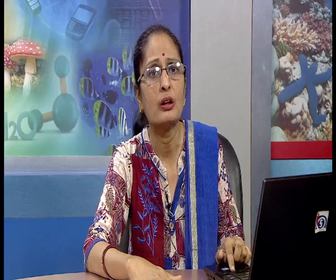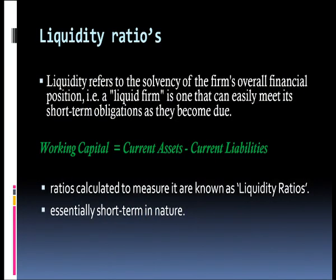We come to the first kind of ratio, which is the liquidity ratio. In this, we will study today the current ratio and the quick ratio. Liquidity ratios are those that help us identify the solvency position of the firm in the short-term, which means we are talking of current assets and current liabilities.